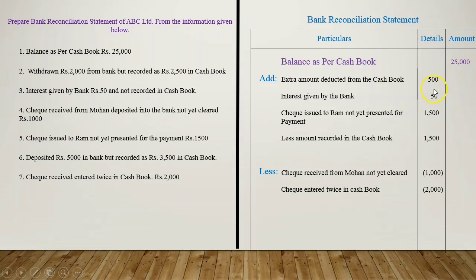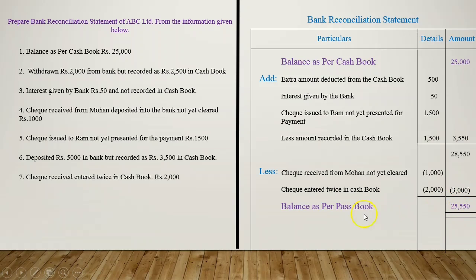Now, we add all the transactions and then add the amount into the balance as per Cash Book. After adding all these, we get Rs. 3550, which added to Rs. 25,000 becomes Rs. 28,550. We then subtract the amounts to be deducted — Rs. 3000 — from Rs. 28,550, giving us Rs. 25,550, which is our balance as per Passbook. So we found the balance as per Passbook from the balance as per Cash Book, which is the motive of Bank Reconciliation Statement. Hope you guys got it — do tell me what else I should explain, and please like, comment, and subscribe. Thank you.